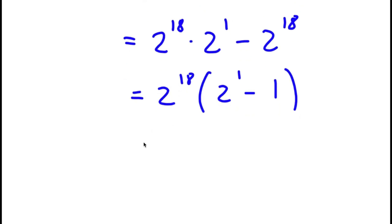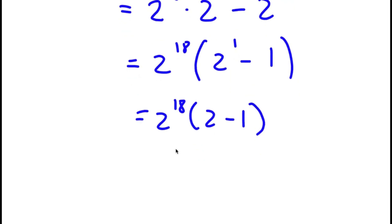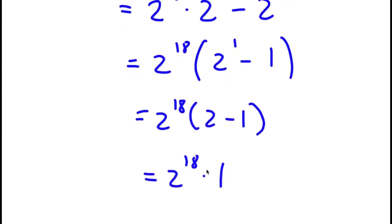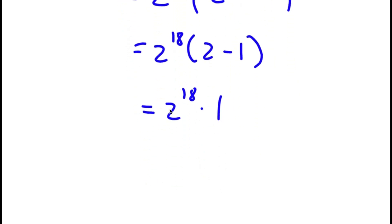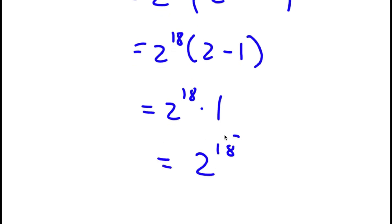Now, 2 to the power of 1 is simply equal to 2, so I have 2 to the power of 18 times 2 minus 1. And 2 minus 1 equals 1, so now I have 2 to the power of 18 times 1. Since 2 to the power of 18 times 1 is simply 2 to the power of 18, I'm left with 2 to the power of 18.